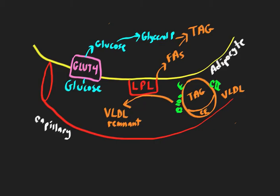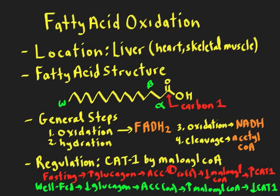Going back to where we started: we talked about the location of fatty acid oxidation with emphasis on the liver, the basic structure and how all the business is at the beta carbon, the general steps with two oxidation steps generating electron carriers that ultimately generate ATP and acetyl-CoA. The regulation is really with the CAT1 enzyme. The entry of the fatty acid into the mitochondria is the rate-limiting step for fatty acid oxidation, regulated by malonyl-CoA, which is the product of acetyl-CoA carboxylase.